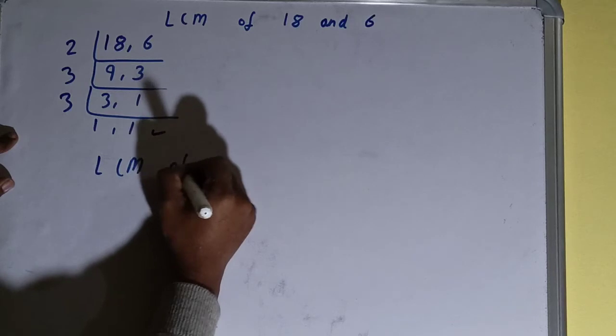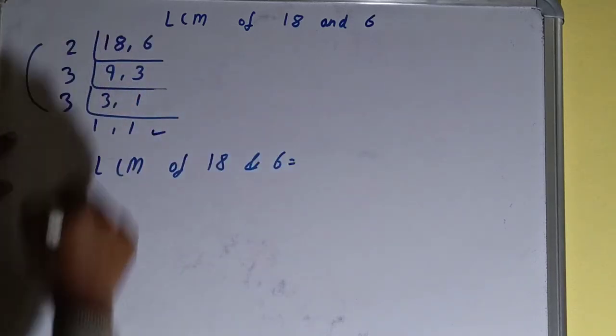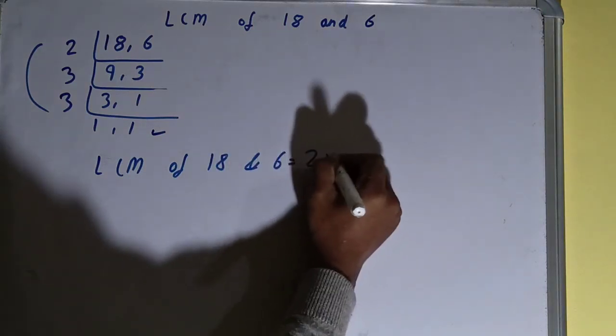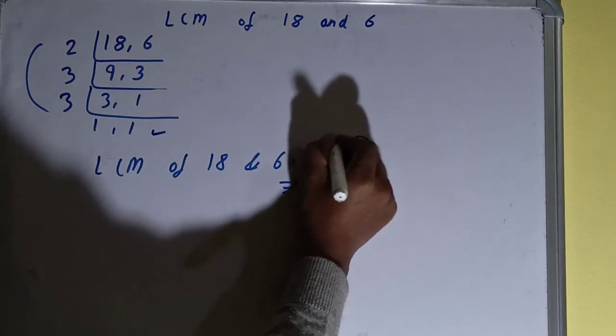That is, LCM of 18 and 6 is equal to multiply whatever you have got on the left-hand side. That is 2 times 3 times 3. So the answer, 3 times 3 is 9, times 2 is 18. So the LCM will be 18. This is all about LCM of 18 and 6.